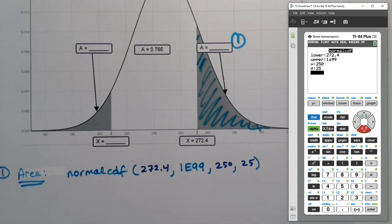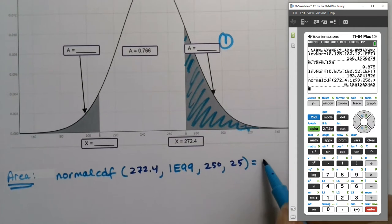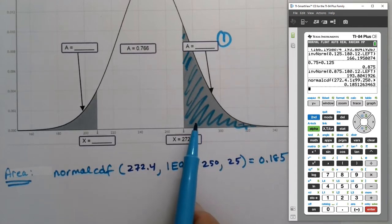So we get that blue zone is about 0.185, which looks about right. I mean, you always want to be able to double check it and make sure it makes sense. If you've gotten 0.85, then you'd know you'd done something wrong, because there's no way you've shaded 85% of the curve.